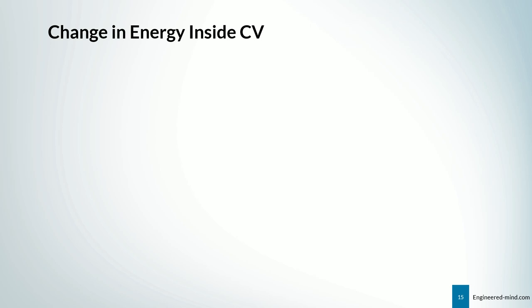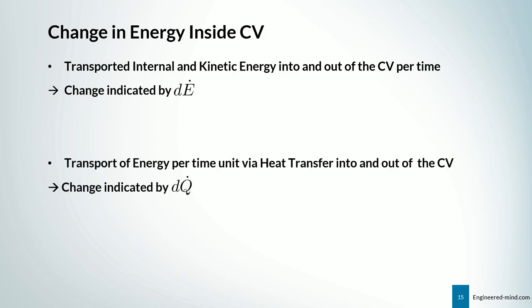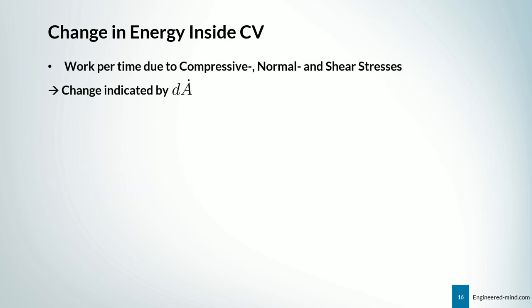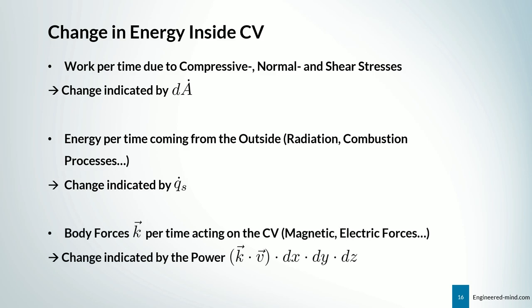For the change in energies inside the control volume the following terms occur: the transported internal and kinetic energy in and out per time, denoted dė; a transport of energy per time via heat transfer, denoted dq̇; work per time due to compressive normal and shear stresses, denoted dȧ; energy per time from external sources such as radiation or combustion, denoted q̇_s; and body forces vector k per time — for instance magnetic or electric forces — indicated by the power k·v·dV.